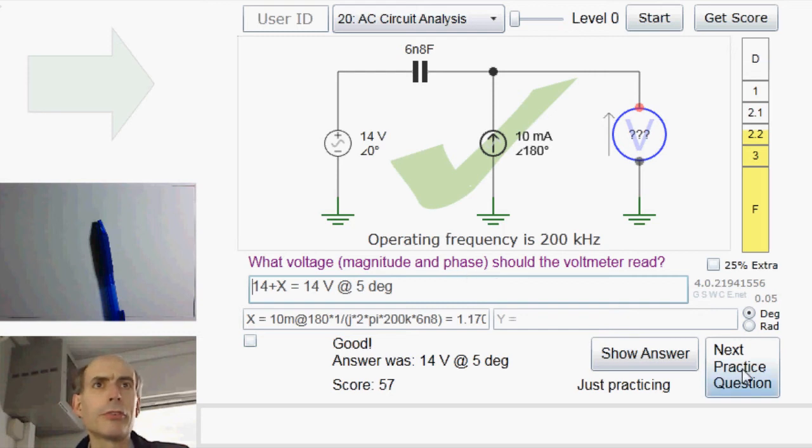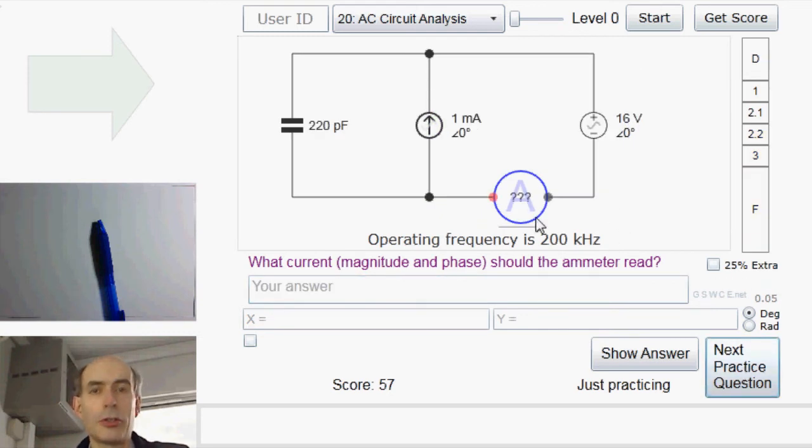Fine. Let's see if I can find a different circuit here. Well, this one is asking what the ammeter is supposed to be reading. And here we have a current source here and a voltage source here. Well, the thing about ammeters in these questions is that the ammeter is a perfect ammeter and therefore has a 0 impedance. If it has 0 impedance, there will be no voltage drop across it, which means that this 16 volts is actually the voltage across this current source and the voltage across this capacitor as well.